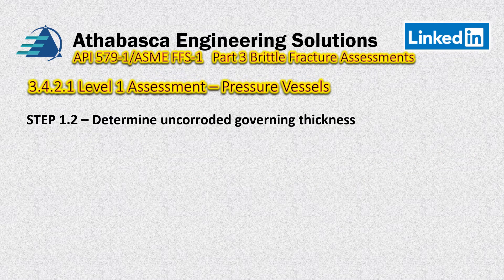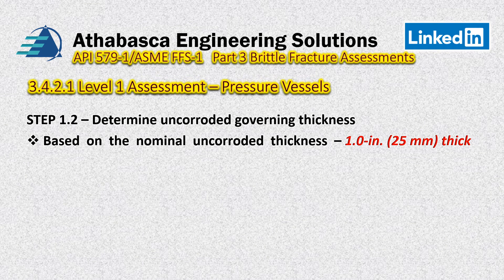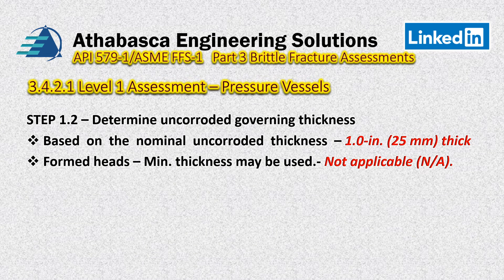Step 1.2 involves a bit of repetition with 1.1: determine the uncorroded governing thickness. For a shell, it's simply the nominal thickness of the uncorroded section — one inch thick, consistent with how the pressure vessel codes require the evaluation. For formed heads, if we had one, we could use the minimum thickness inside the knuckle region, but in this case that's not applicable.